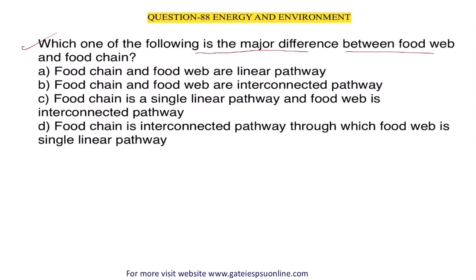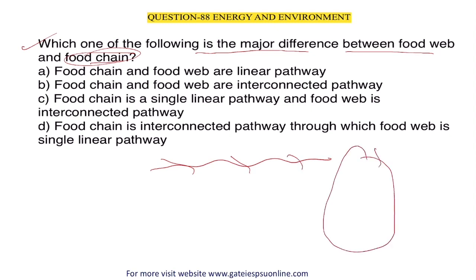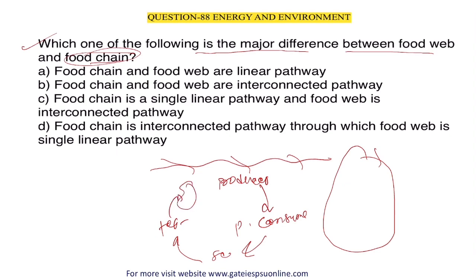Next question: what is the major difference between a food web and a food chain? A food chain is a linear or sometimes cyclic structure. The basic food chain includes producers, then primary consumers, secondary consumers, tertiary consumers, and decomposers, which feed back to the producer — completing the cycle.